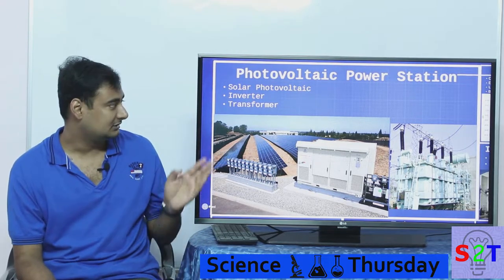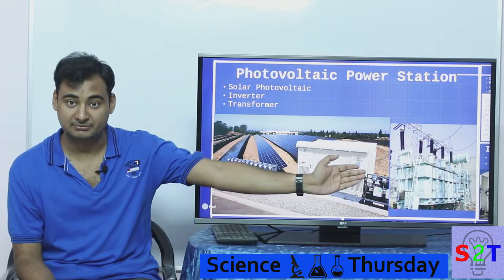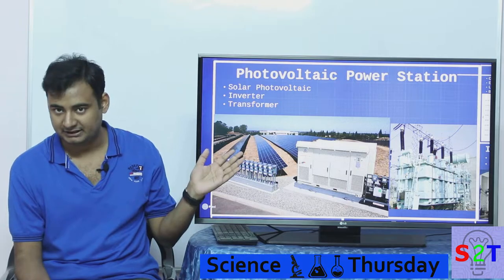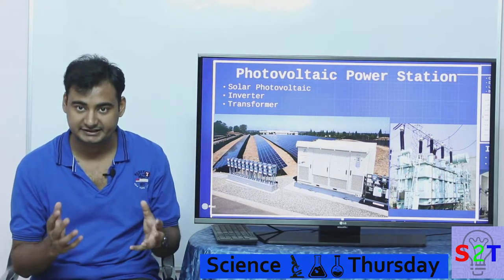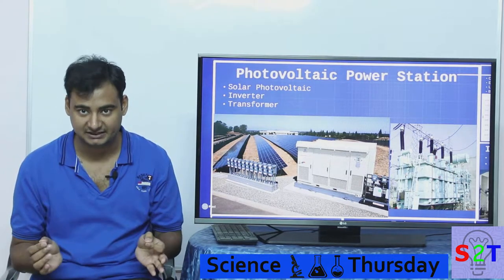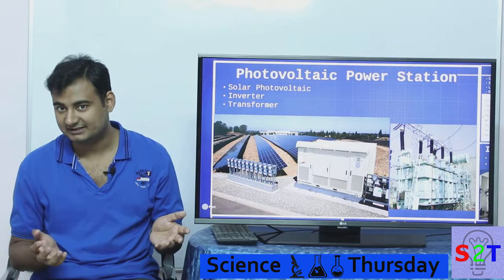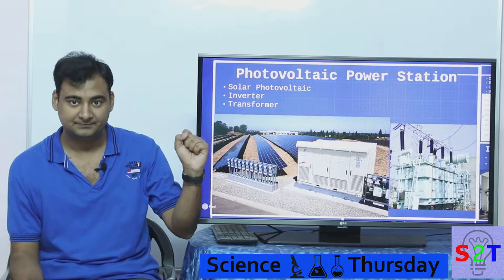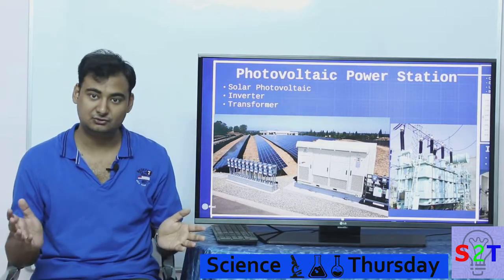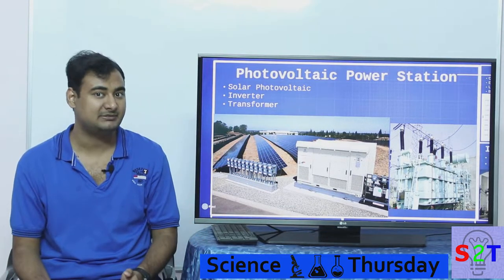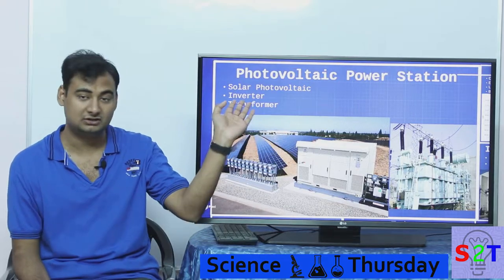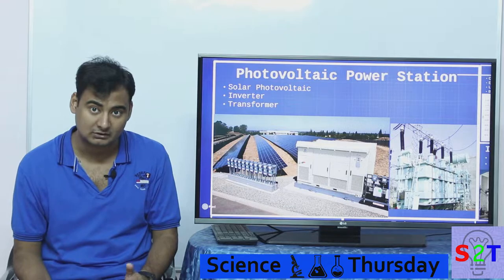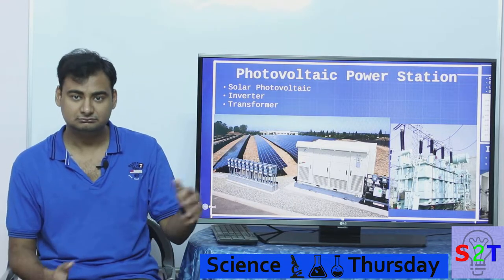Component number one: solar cells. Component number two: inverters. Component number three: step-up transformer. Solar cells are DC — direct current — like a battery. Your grid does not run on that; your grid runs on AC current, so it goes to an inverter. Inverters can do step-up or step-down. The voltage coming off your grid can be as high as 1,500 volts, so it might do a step-down.